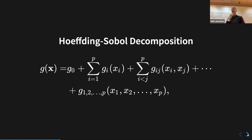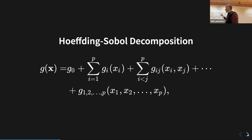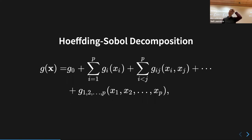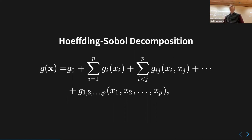Each individual xᵢ is one of the inputs that might affect our system. For example, in ice sheet modeling one input might be sea surface temperature at the starting point, another might come from an atmospheric model. We have p inputs — I use p because that's the statistician's notation, even though you might expect p to represent probability.